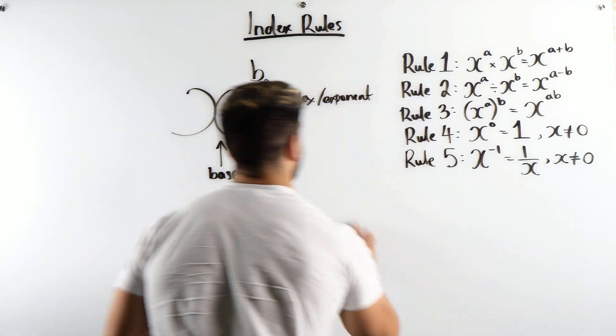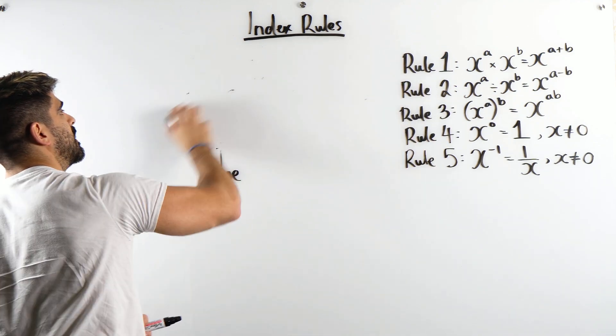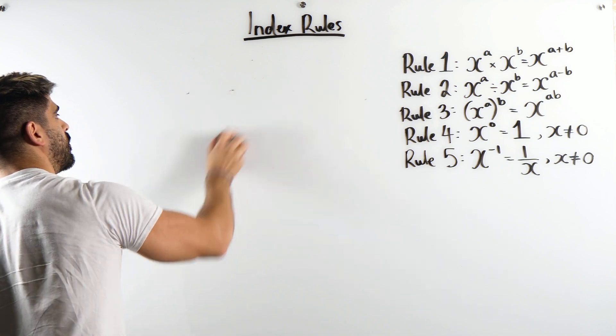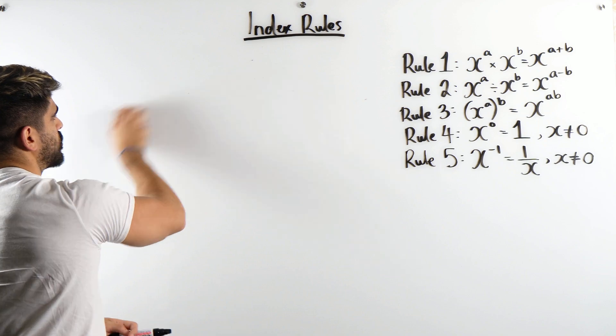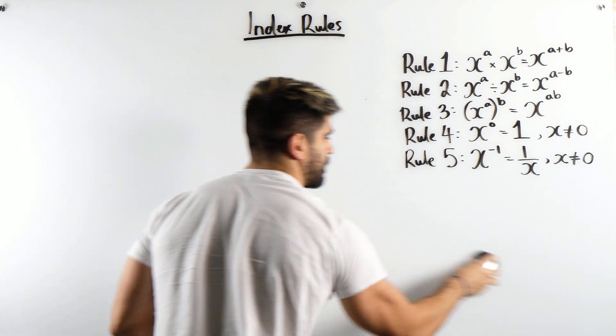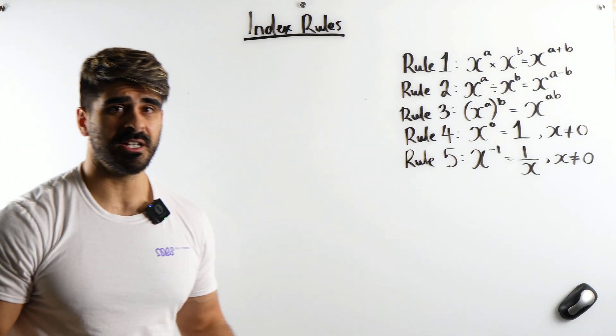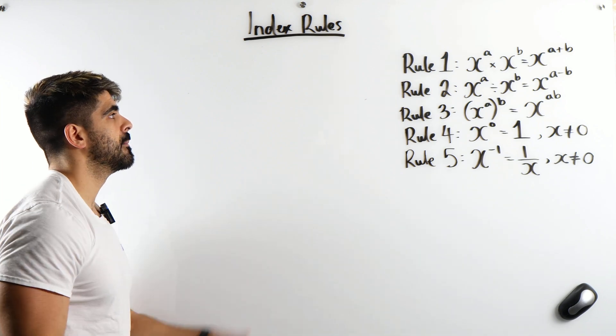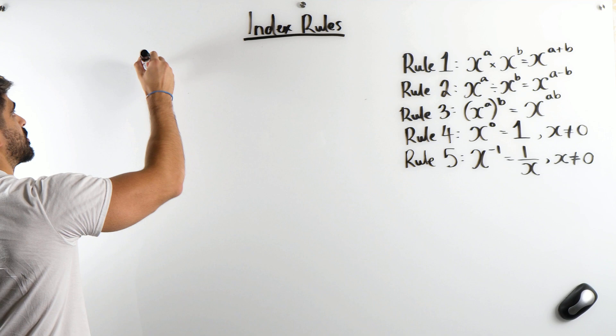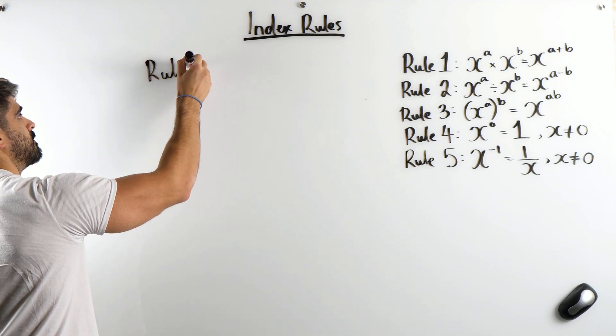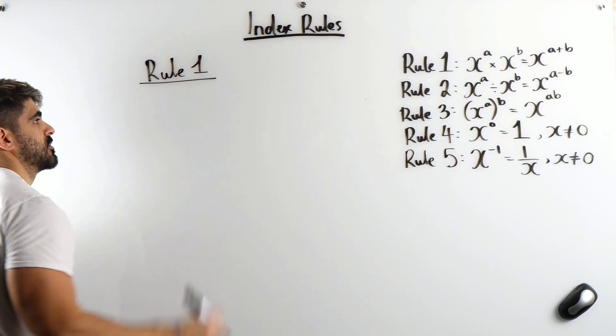Now, why is it that when we multiply, we have to add the powers? Well, we have to remind ourselves, what do we even mean by powers? Power just means repeated multiplication. So when we look at rule one, let's look at an example.